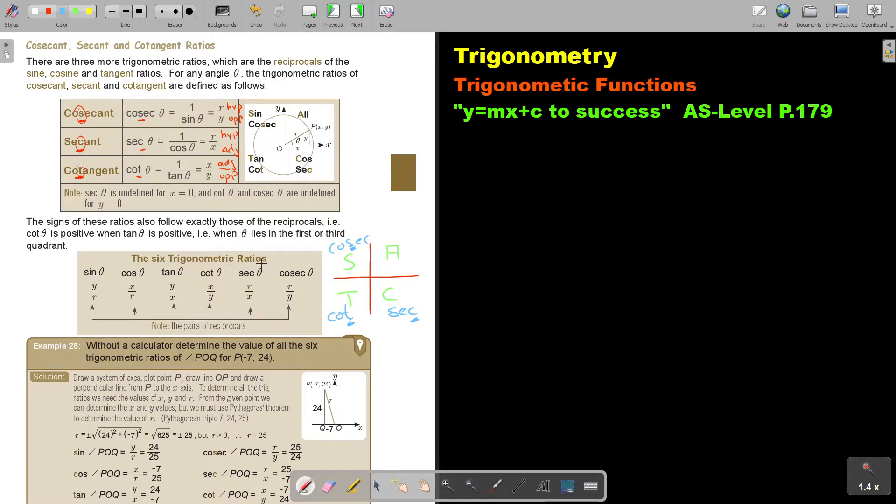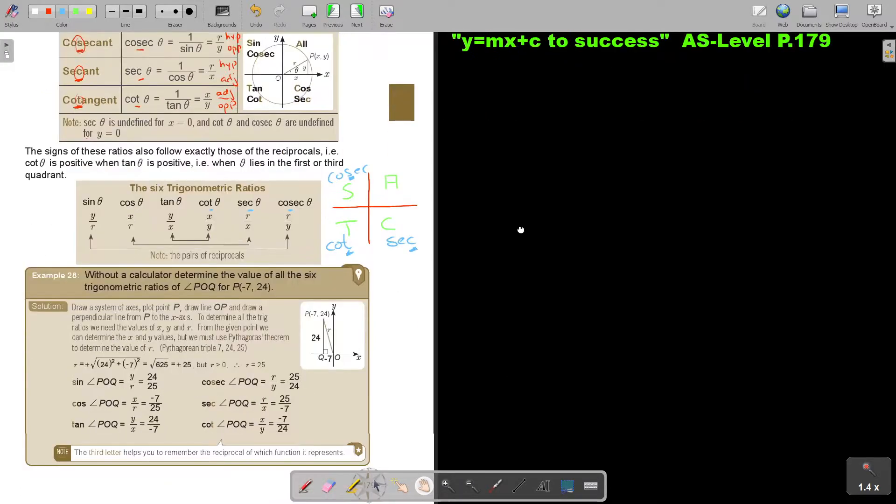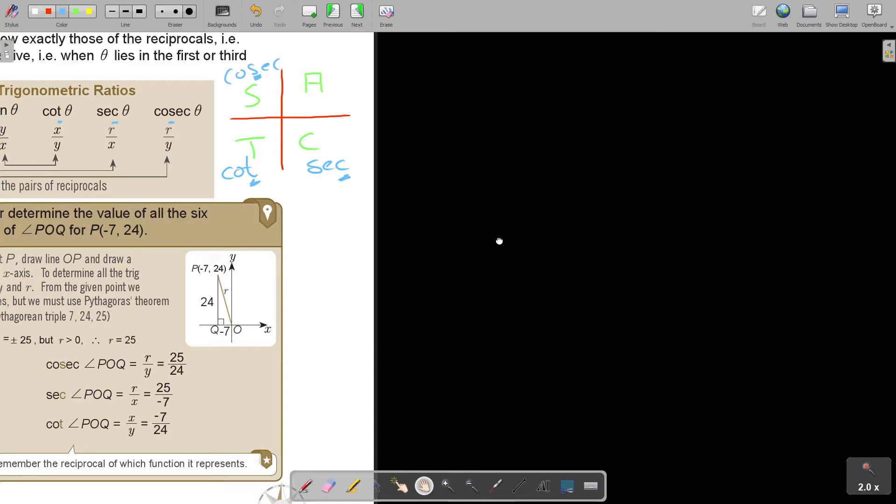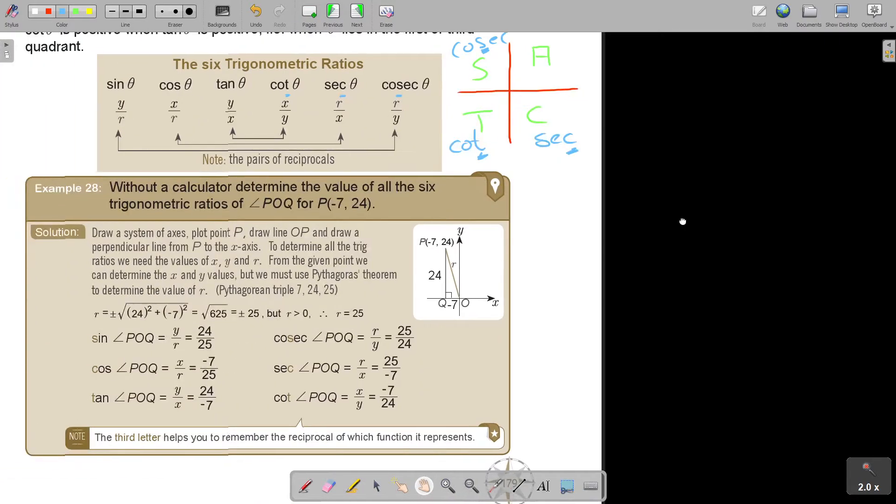The six trigonometry ratios. If you look at this one and this one, you see it's just swapped around. This one the same. This one the same. So, can you see these two are friends? Do you see these two are friends? Do you see these two are friends? Now, it's pairs of reciprocals. This one. Now, we're just going to start using it. I'm going to make it a bit bigger, that you see better.